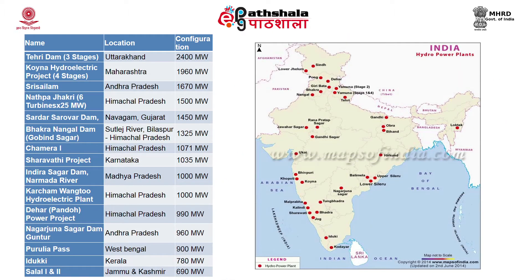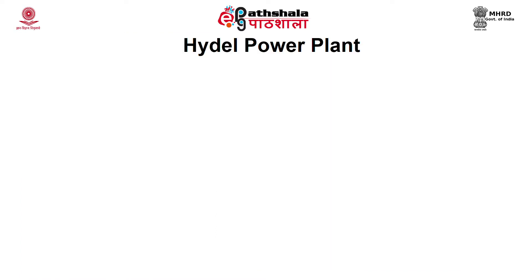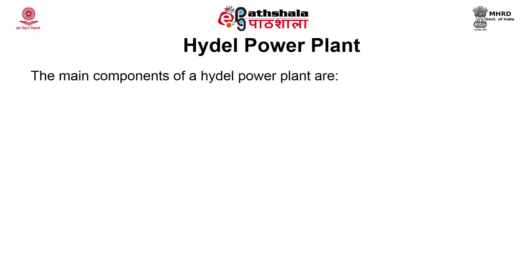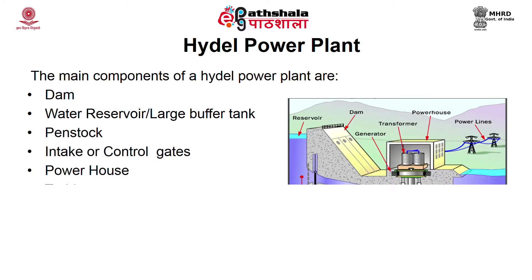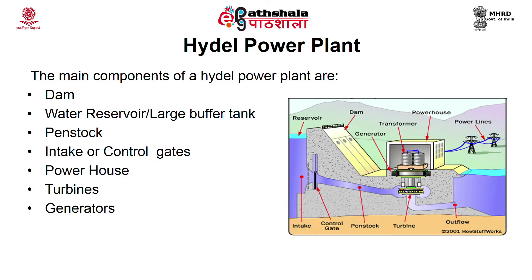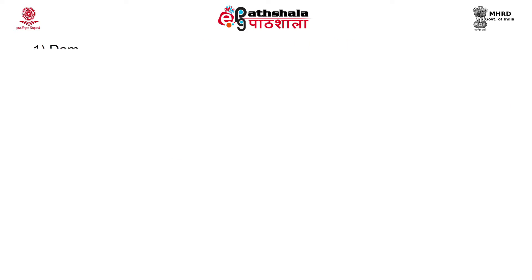The map shows hydropower plants in India — most potential is in the Himalayan states as river-based projects, while other states use irrigation canals. The major components of hydropower plants are: dam, water reservoir, penstock, intake or control gates, powerhouse, turbines, and generator.